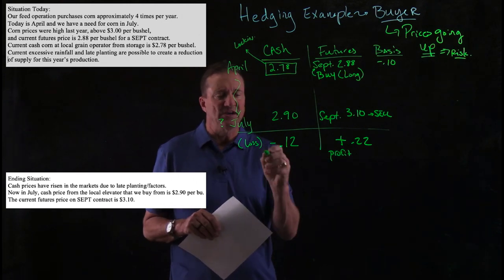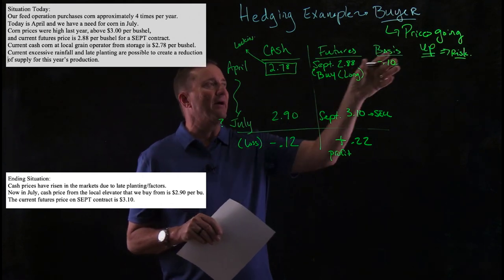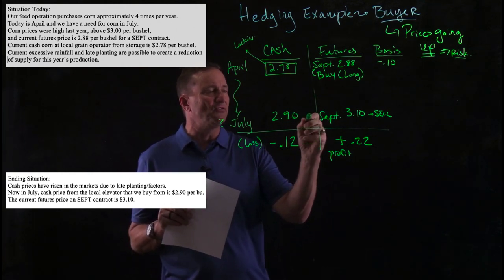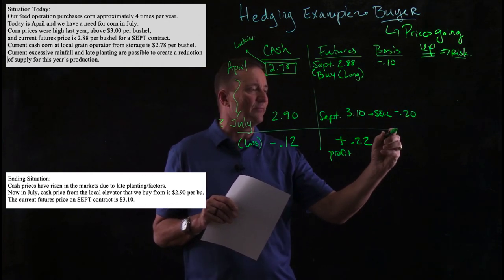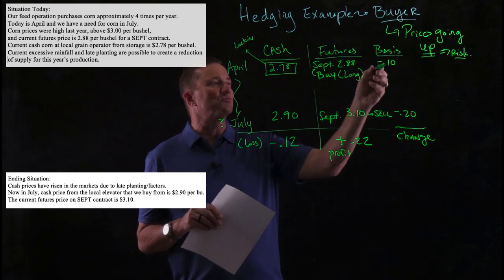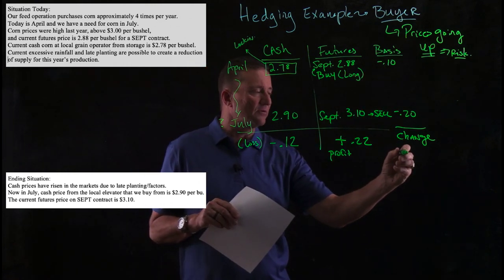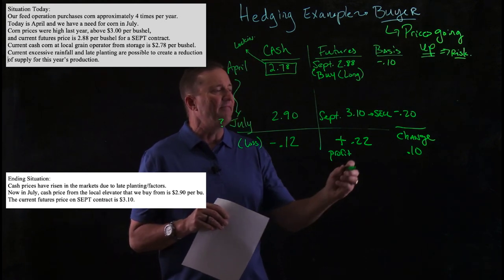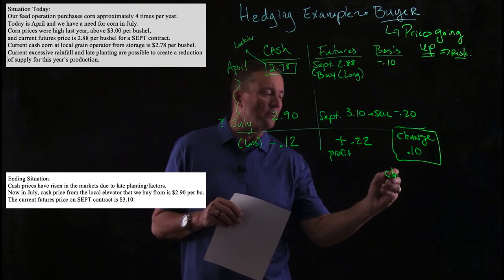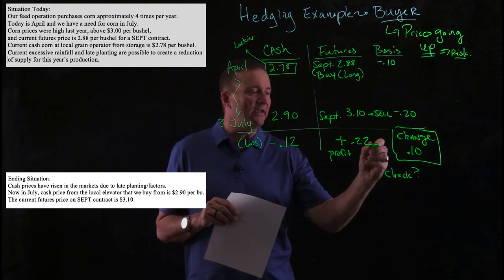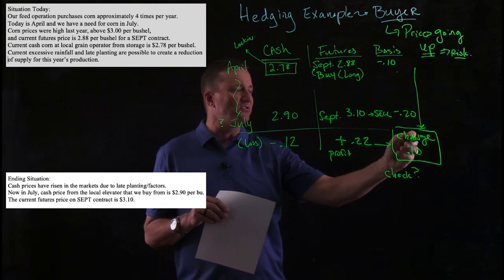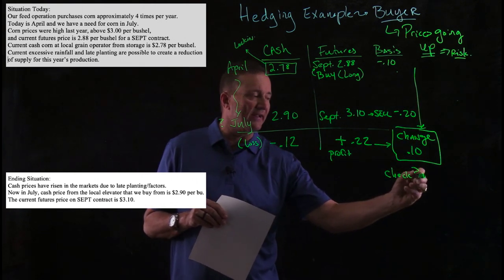The profit of $0.22 and the loss of $0.12 — the positive and negative — hopefully make sense. It's always about knowing the kind of position you're in. As a buyer, prices going up is bad. What about the basis? $2.90 minus $3.10 — the basis is now negative $0.20. The basis changed by $0.10 from negative $0.10 to negative $0.20. How do you check your work? The change in the basis ought to equal the net change across the markets. That column and that row should match — and they do, so we're in good shape.